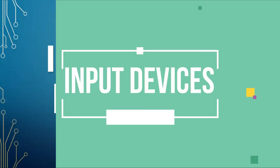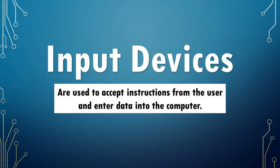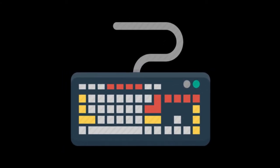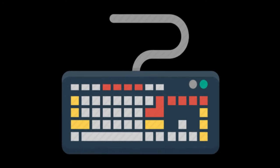Input devices are used to accept instructions from the user and enter data into the computer. In order to feed data into the computer, we must use an input device. These devices accept user responses such as clicking or typing, which will then enter the computer to be processed. One common example of an input device is the keyboard. Once the user types something on the keyboard, it will enter the computer and be displayed on the screen.